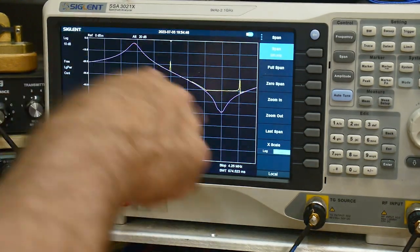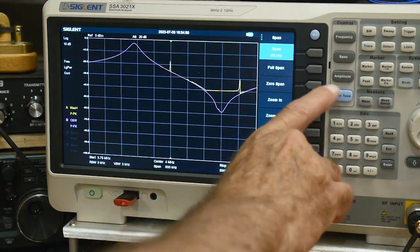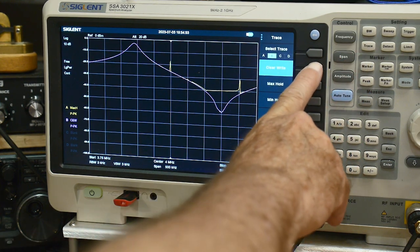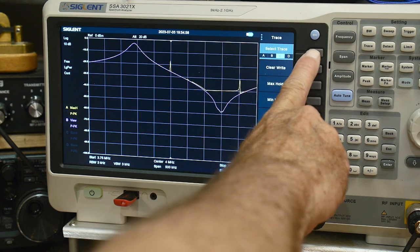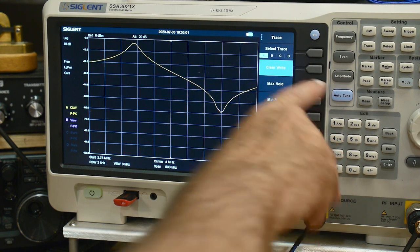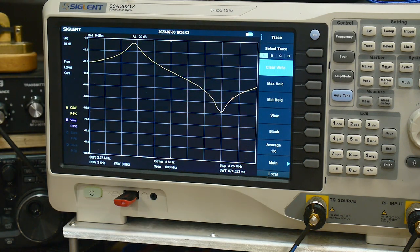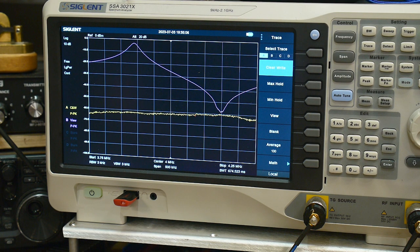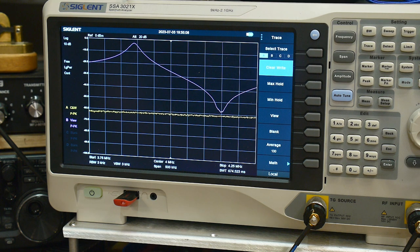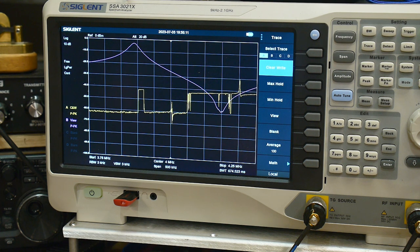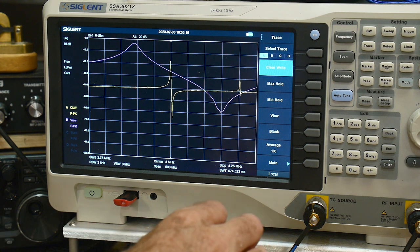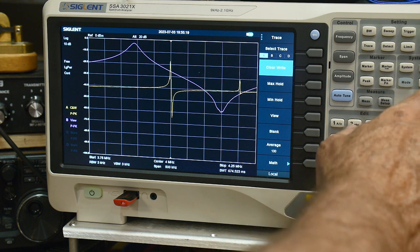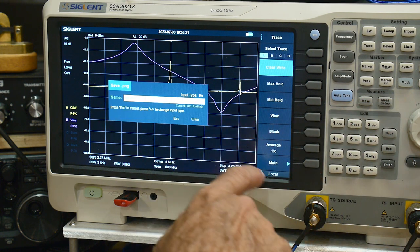There we go. We are going to view this trace in memory. There we go, now we're going to go back to trace A and clear it. This is our ceramic resonator. Now when I get rid of it, it stays there in memory. Let me put in the crystal again. That's a very nice comparison picture. Let me take a picture of this.